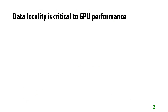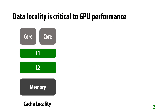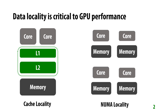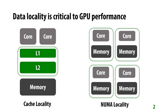Data locality in GPUs is of critical importance to harness the massive computational power that GPUs offer. Data locality is of two types: cache locality, to make good use of the caching hierarchy, and NUMA locality, to place data close to the computation that uses it in a non-uniform memory architecture.